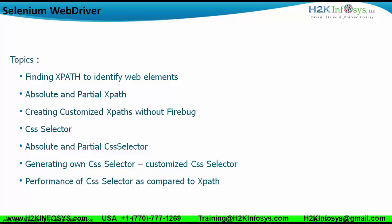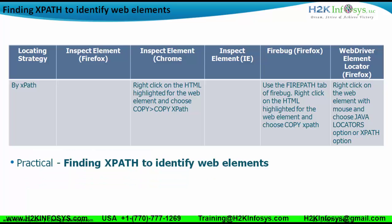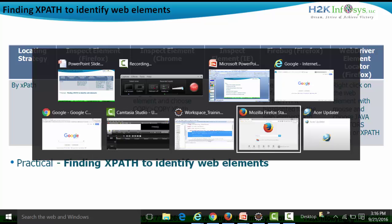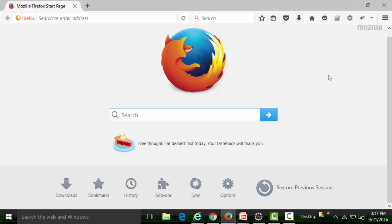Let us look at finding XPath for web elements. If we are using the XPath locating strategy, we can use the Inspect Element tool in Chrome to find XPath. We can also use Firebug to get the XPath, and we can use the WebDriver Element Locator present in Firefox to get the XPath as well. Practically, we will see how to use these Inspect Element tools and Firebug to get the XPath. Open the Firefox browser.